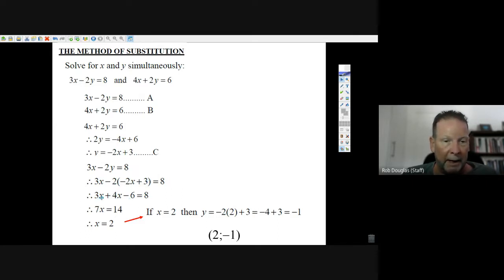There's 3x plus 4x is 7x. We add 6 to both sides, 8 plus 6 is 14, then divide by 7, we get x equals 2.